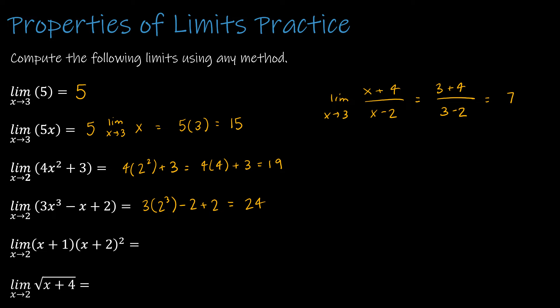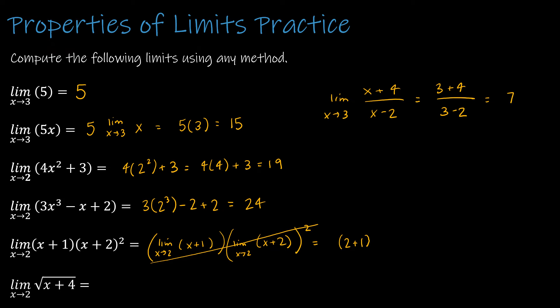For 3 times 2 cubed minus 2 plus 2, direct substitution gives 3 times 8, minus 2 plus 2. For the next one, the property would say find the limit as x approaches 2 of x plus 1, times the limit as x approaches 2 of x plus 2 squared — but can I just plug in 2? Yes. So direct substituting: 2 plus 1 is 3, and 2 plus 2 squared is 16, so 16 times 3 is 48.